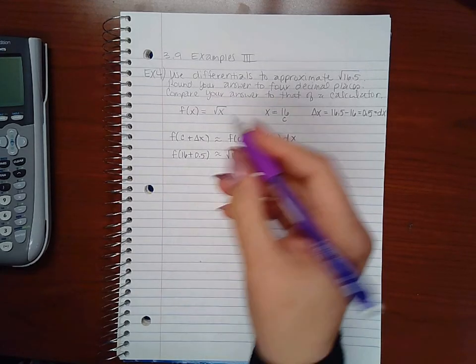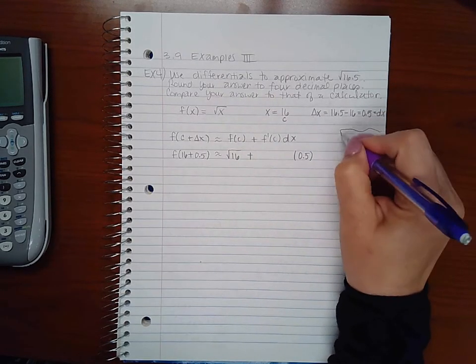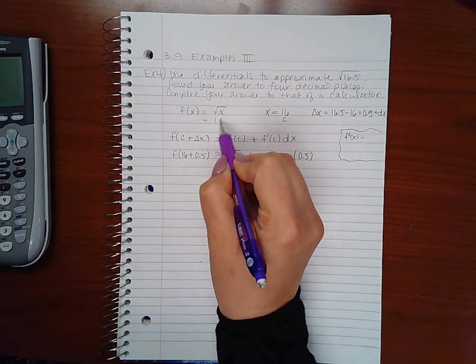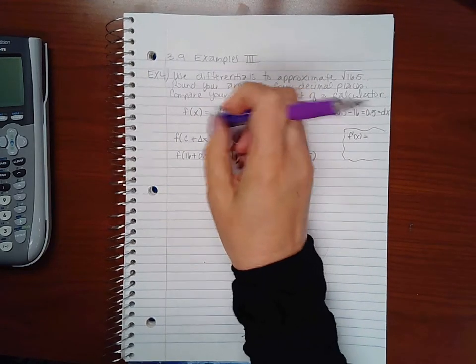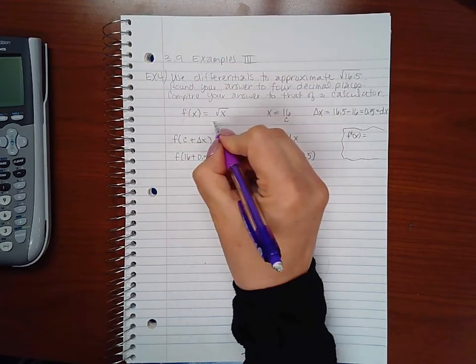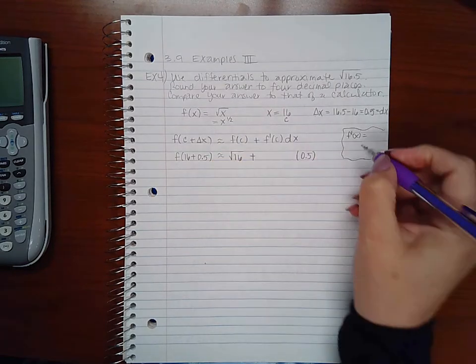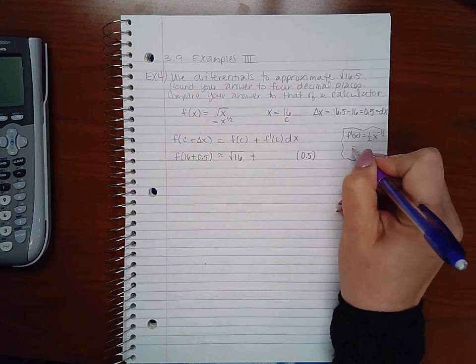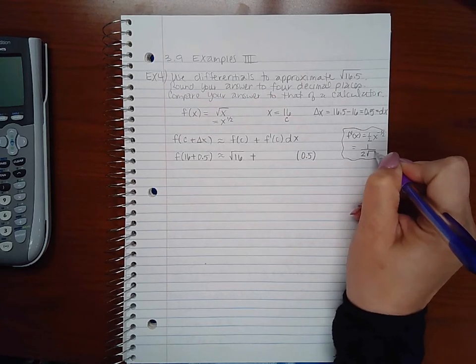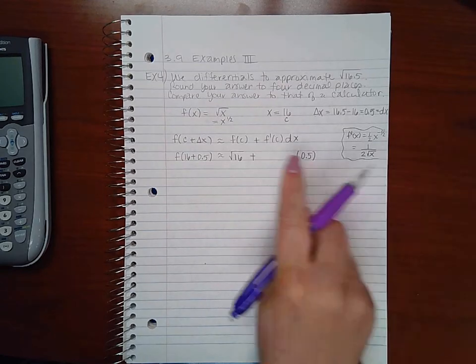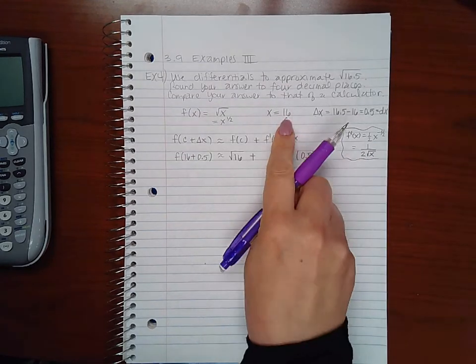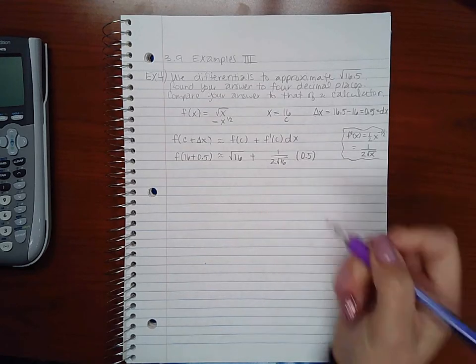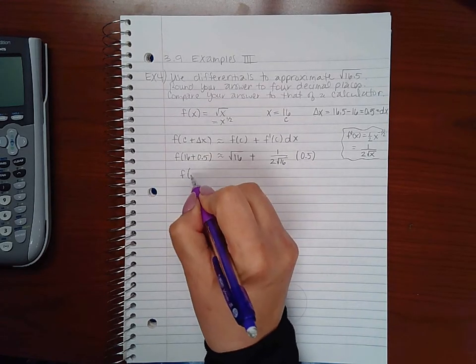Now if I'm finding f prime, I need to take x raised to the one half—I need to have the exponent form of my original function. That means I would have one half x to the negative one half. Another way of writing that is one over two square root of x. So if I plug in c, remember c is 16, I get one over two square root of 16.